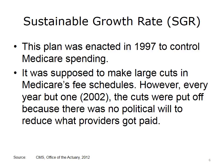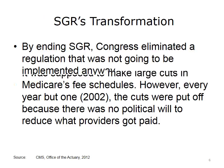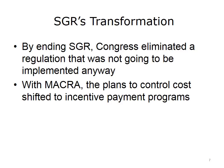Many organizations that represented physicians, hospitals, and other health care providers heavily lobbied Congress to not implement these cuts. This continuous lobbying resulted in SGR cuts, with the exception of one year, never being implemented. This acrimonious atmosphere resulted in the inability to make the kind of radical reductions required by the SGR formula. By ending SGR, Congress eliminated a regulation that wasn't being implemented.